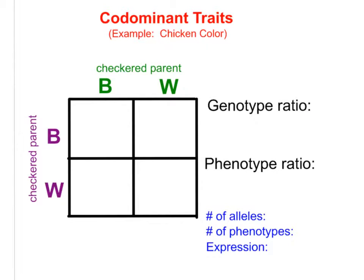Let's look at our Punnett square for this. This kind of expression, where both alleles are being equally and fully expressed, we call codominant. This is a codominant situation. So let's cross two checkered parents — each one has both alleles being fully expressed. You can see that both the black and the white alleles are written as capitals, because both are fully expressed. There isn't a recessive per se.